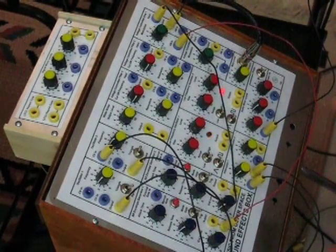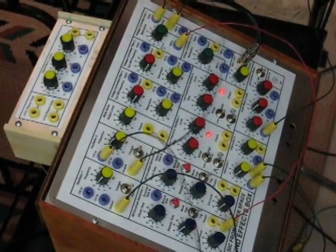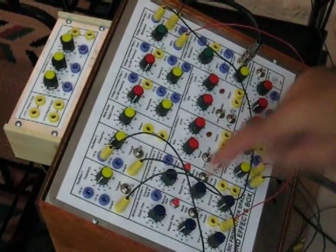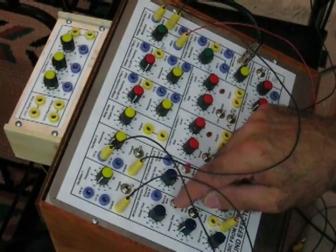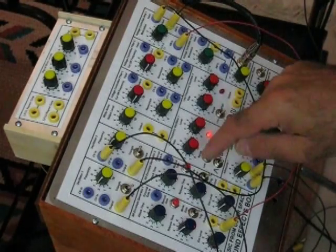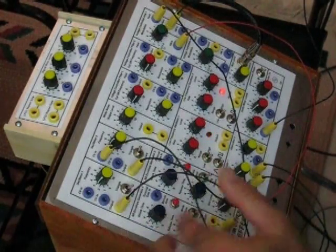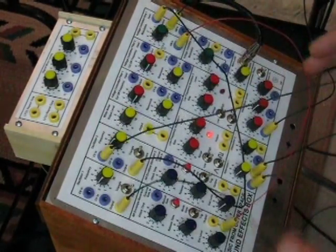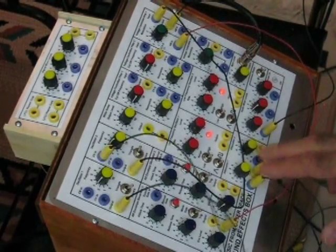What I'd like to demonstrate here is how by using the two oscillators, one of the voltage controlled amplifiers, and one of the AR generators, you can make bell type sounds. So what I'm doing is I'm going to manually gate this AR envelope generator. And you see he's controlling the output of the voltage controlled amplifier. And what I'm doing is I'm modulating oscillator number two with the output of oscillator number one.